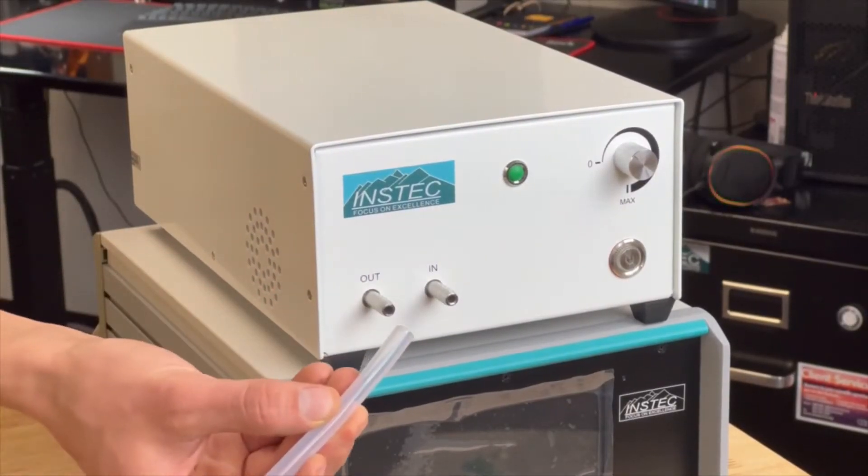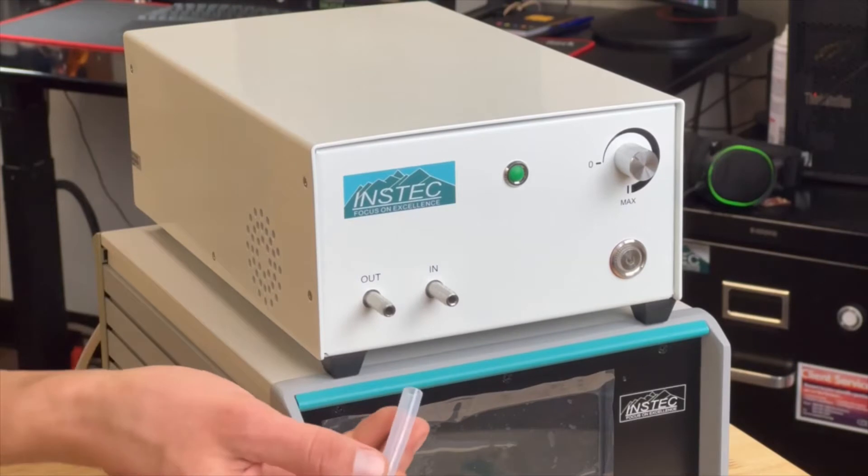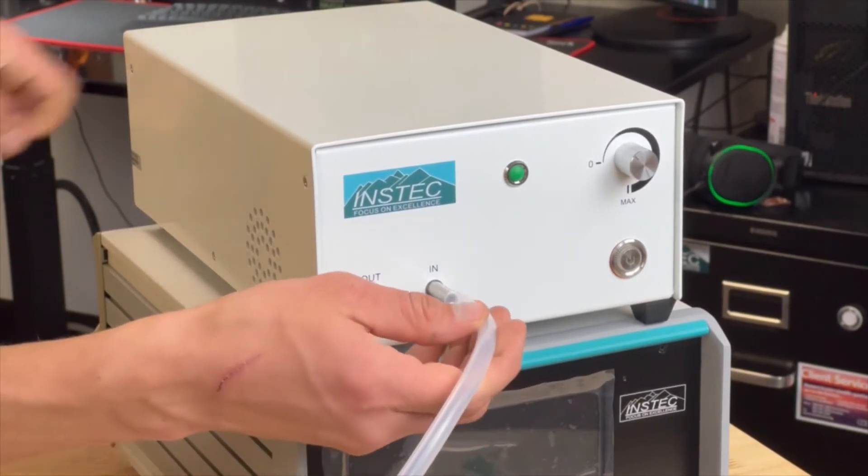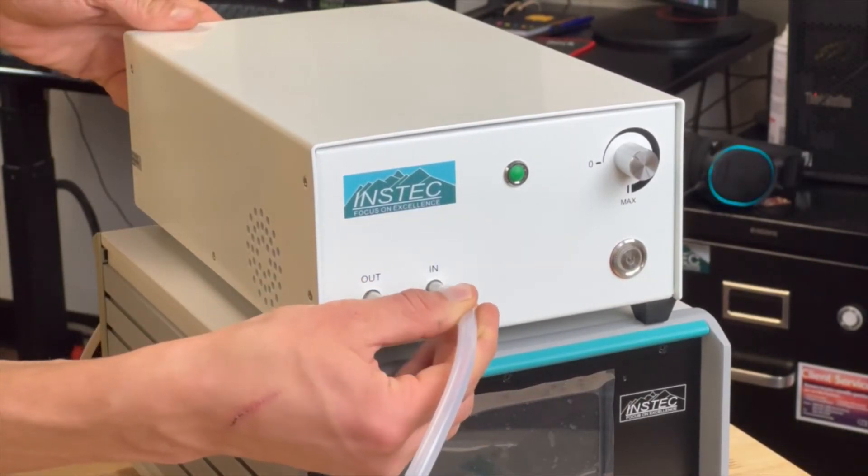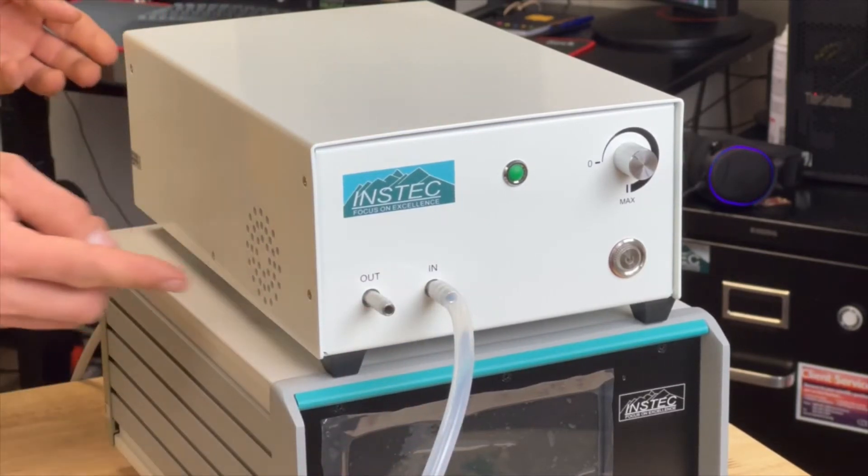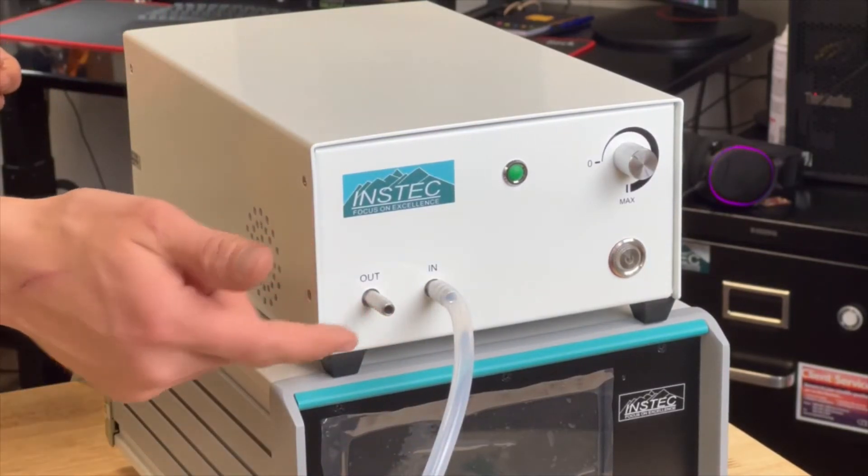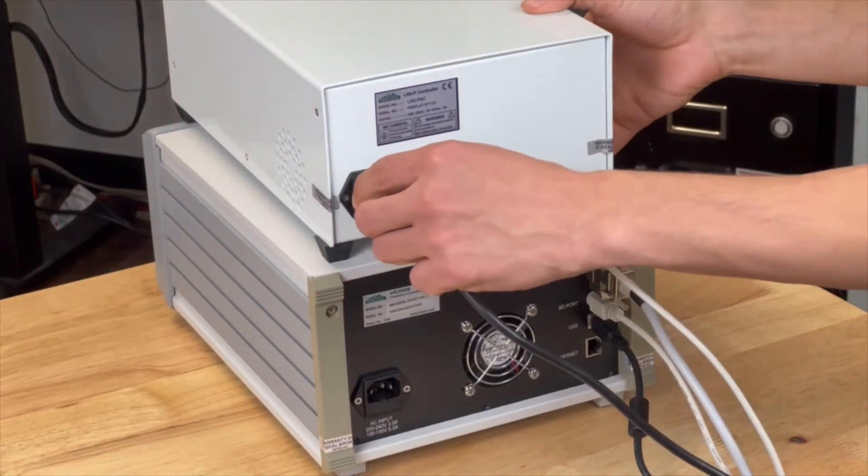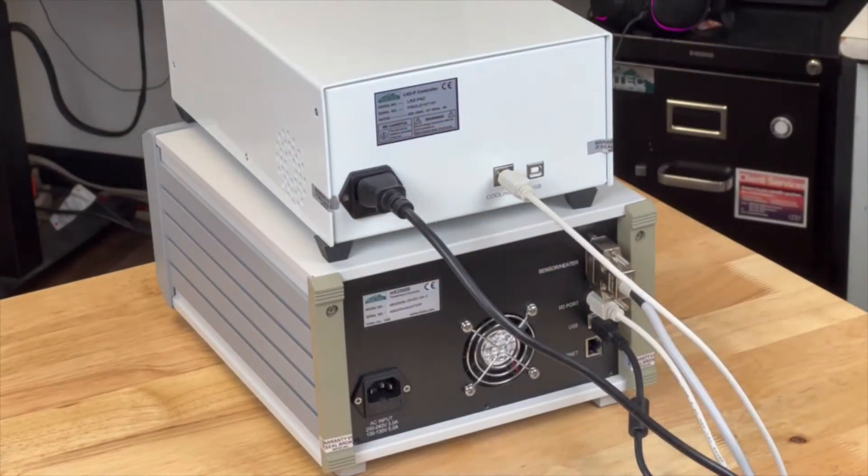Next connect the stage N2 gas outlet tubing to the suction pump inlet barbed connection. The suction pump pulls gas through the inlet. A heater then warms it before outputting exhaust as warm N2 air. Now connect the power cables for both the LN2 pump and temperature controller.